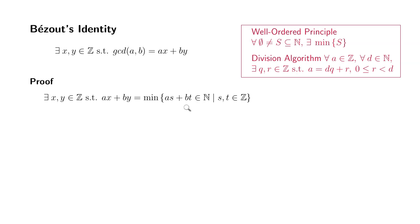By the well-ordering principle, there's going to be a minimum element. We're going to call that minimum element ax plus by — so there exist integers x and y such that ax plus by is that minimum element. All you have to do now is show that ax plus by is the greatest common divisor of a and b.